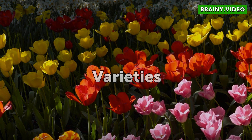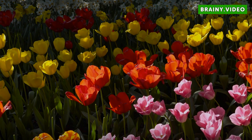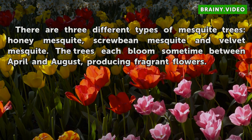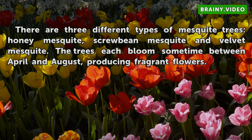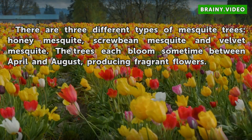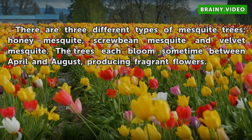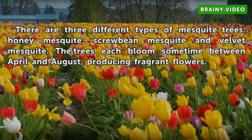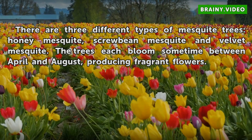Varieties. There are three different types of mesquite trees: honey mesquite, screw bean mesquite, and velvet mesquite. The trees each bloom sometime between April and August, producing fragrant flowers.